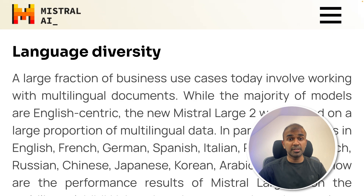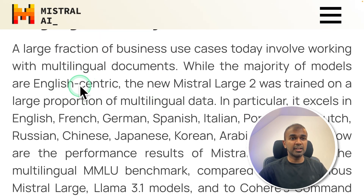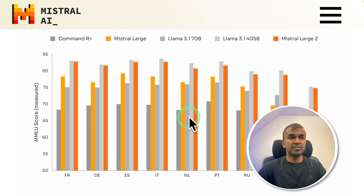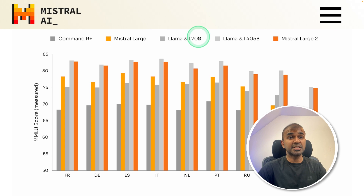There are a few other things which might interest you — Language Diversity. Other than English, this model excels in French, German, Spanish, Italian, Portuguese, Dutch, Russian, Chinese, Japanese, Korean, Arabic, and Hindi. Compared with Command R+, Mistral Large 2 is performing much better, but it's slightly lower than Llama 3.1 in regards to multilingual performance.